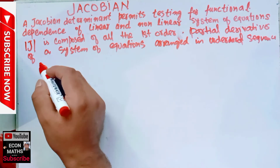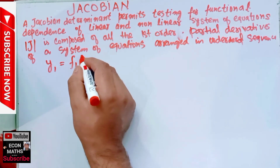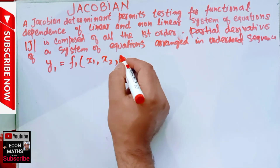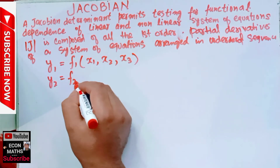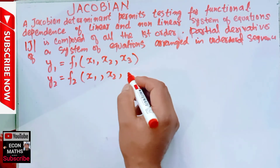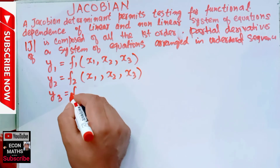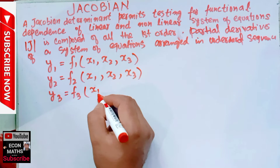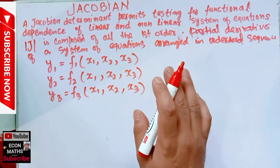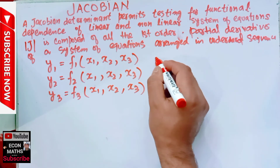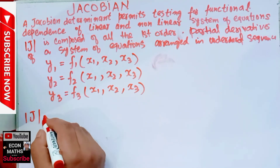Now, if we are given a system of equations — say, y1 = f1(x1, x2, x3), y2 = f2(x1, x2, x3), and y3 = f3(x1, x2, x3) — the Jacobian determinant is denoted and given as follows.